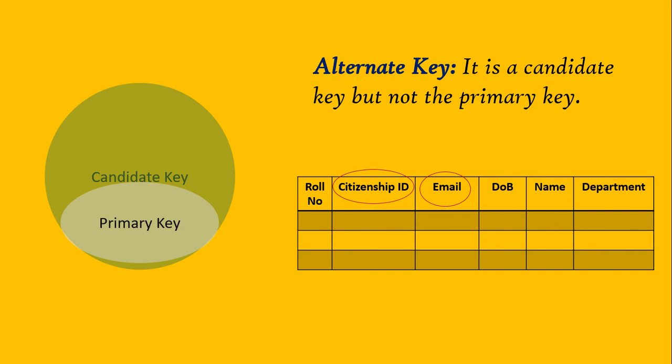Next comes alternate key. Out of all candidate keys, one is chosen as the primary key, and the remaining ones are called alternate keys. For example, if there were four candidate keys and roll number is chosen as the primary key, then citizenship ID and email ID become alternate keys.